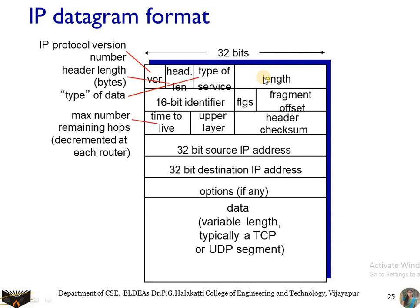Next we have the datagram length field. This is the total length of the IP datagram, containing header plus data, measured in bytes. This field is 16 bits long. Theoretically, an IP datagram can have up to 65,535 bytes, but datagrams are rarely larger than 1,500 bytes.